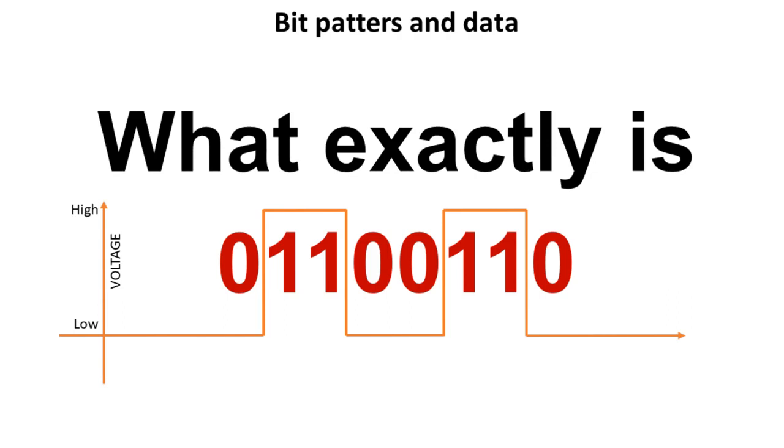But what exactly is that pattern of 0s and 1s? The answer is it's impossible to tell until we know how the data is being interpreted. You can't simply intercept a string of 0s and 1s flying down some electrical cable and know, for example, that it's a credit card number or someone's password. Until you know how to interpret that data, it's simply meaningless.